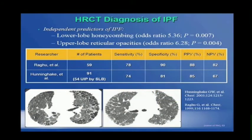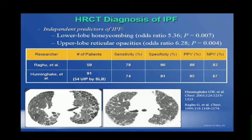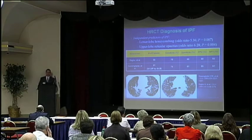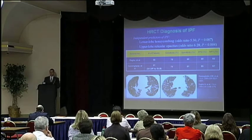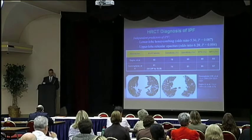Gary Huntinghockey did a similar approach with 91 patients, and 54 of these had UIP by surgical lung biopsy. He found that two findings — lower lobe honeycombing and upper lobe reticular opacities — had a particularly good correlation for the diagnosis of UIP by surgical lung biopsy. Using these two findings, his sensitivity was 74% and specificity was 81%. So high-resolution CT scan, in conjunction with a clinical evaluation, is very useful in the diagnosis of IPF.